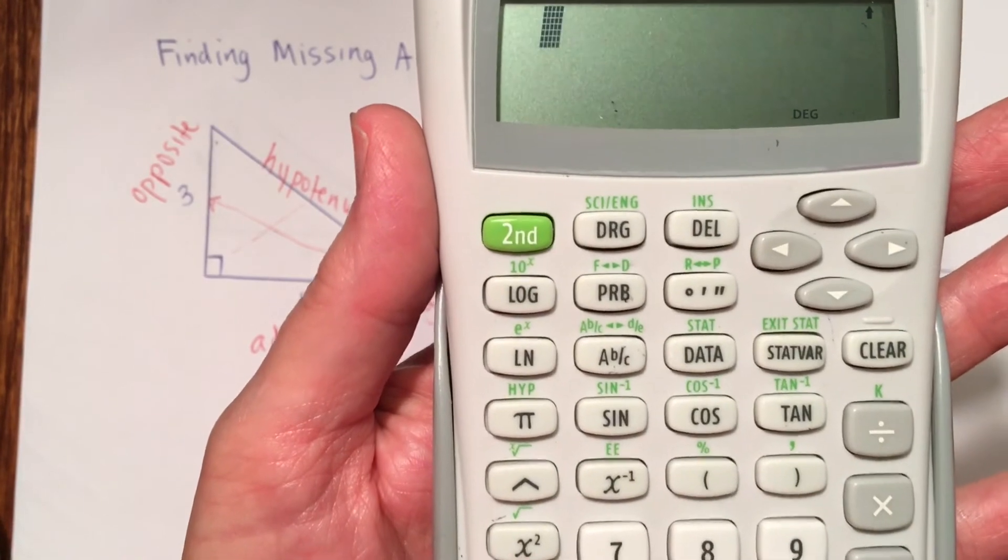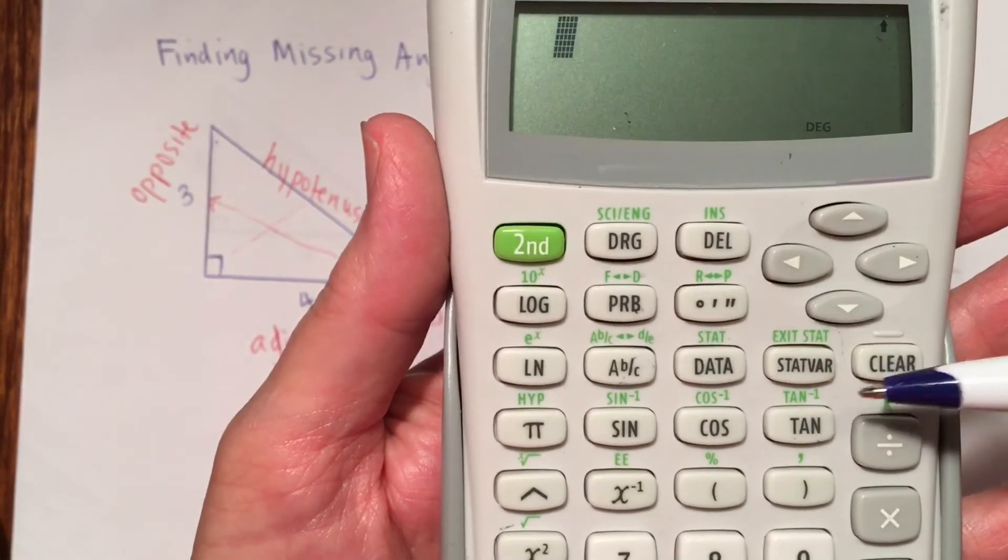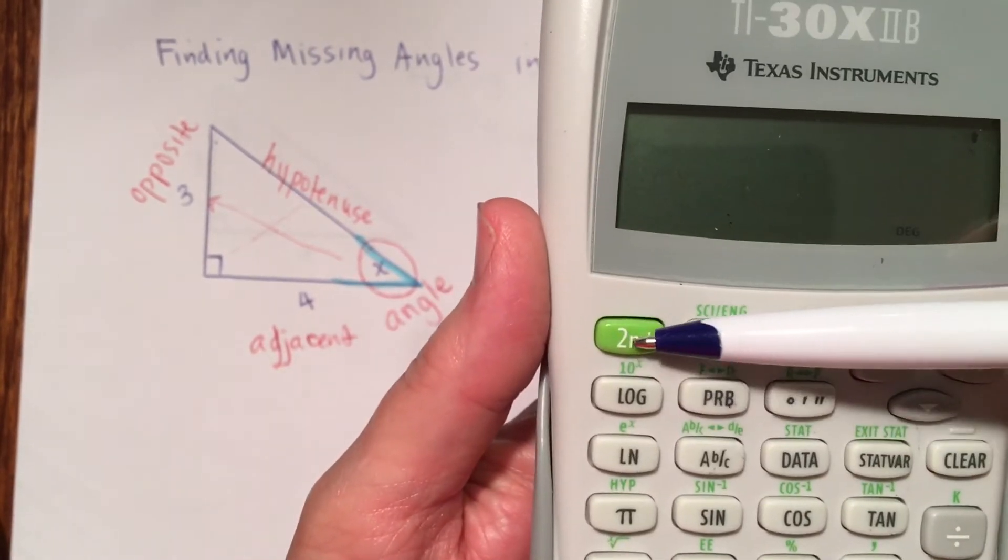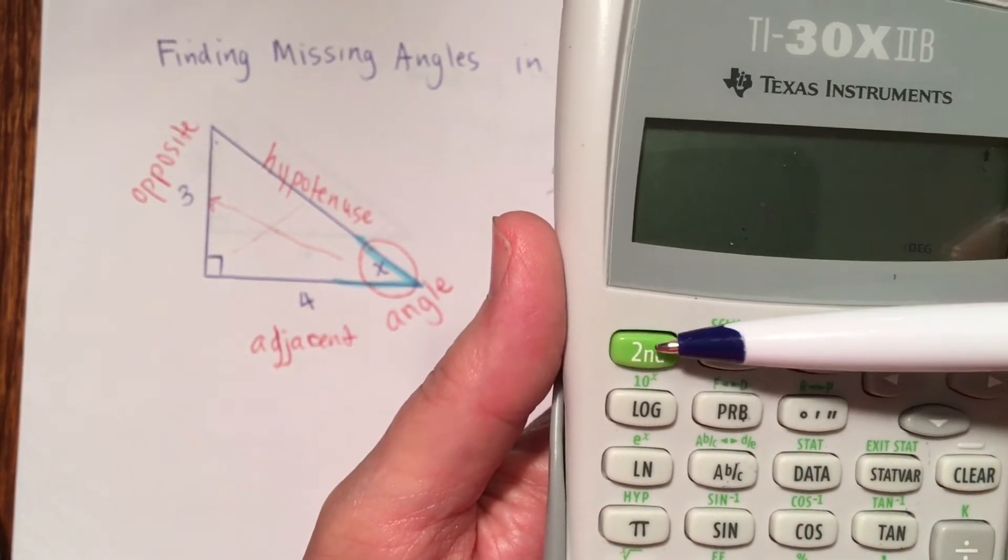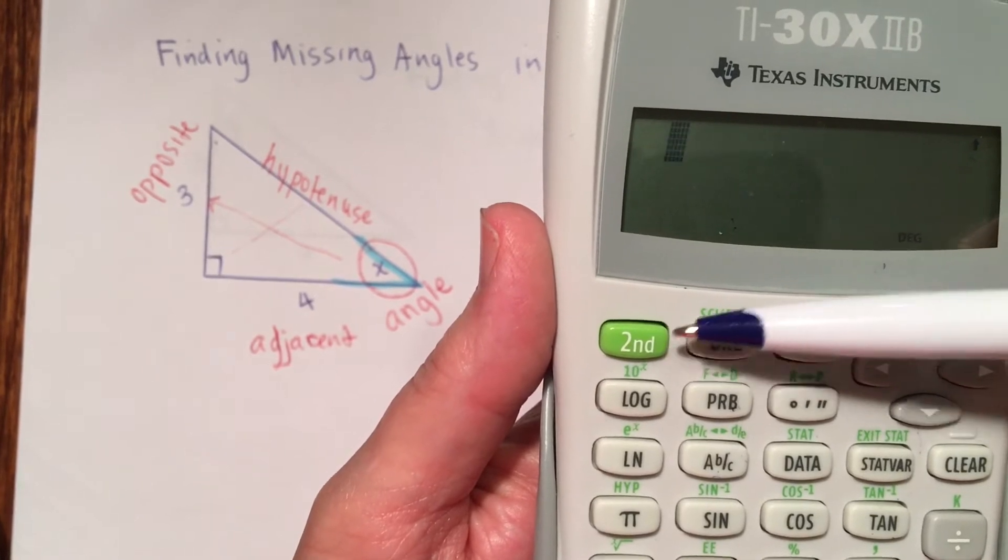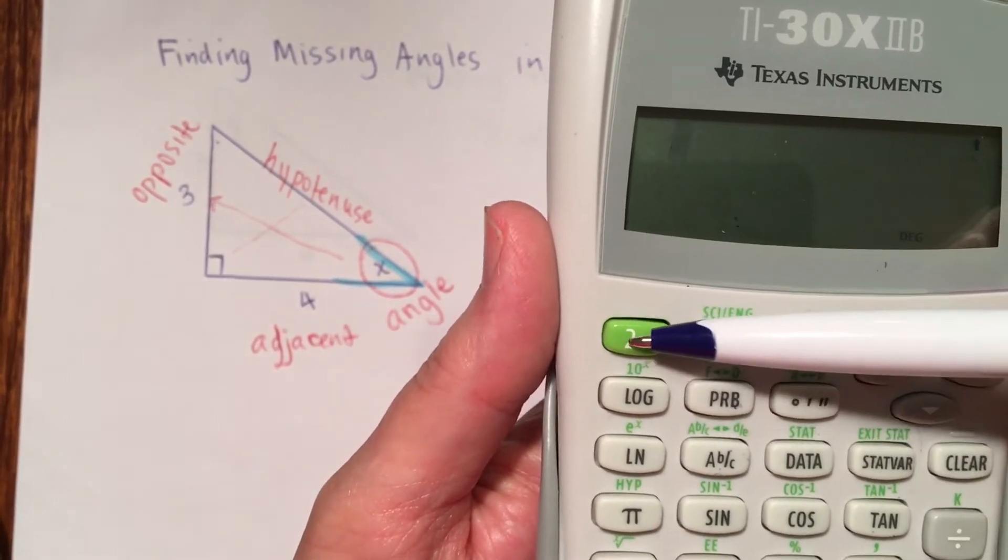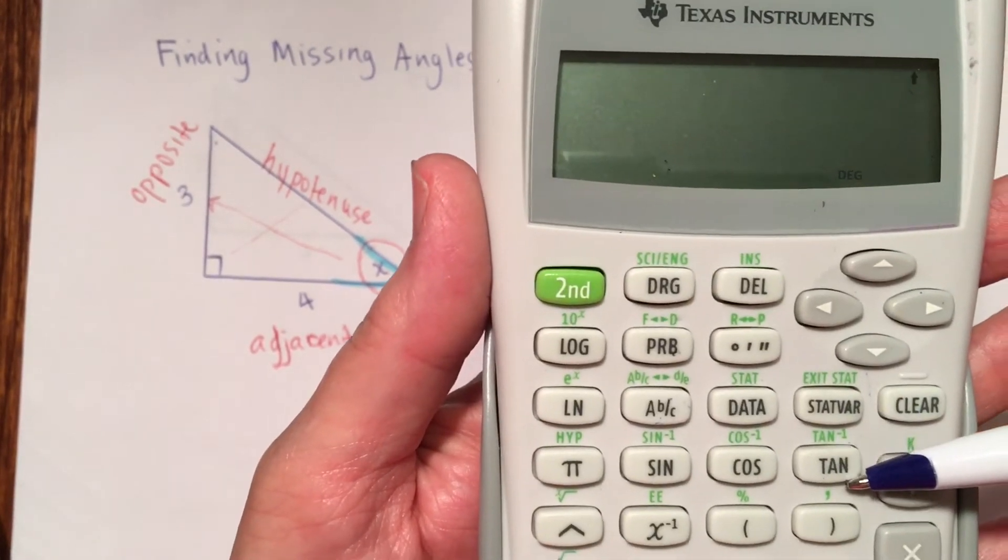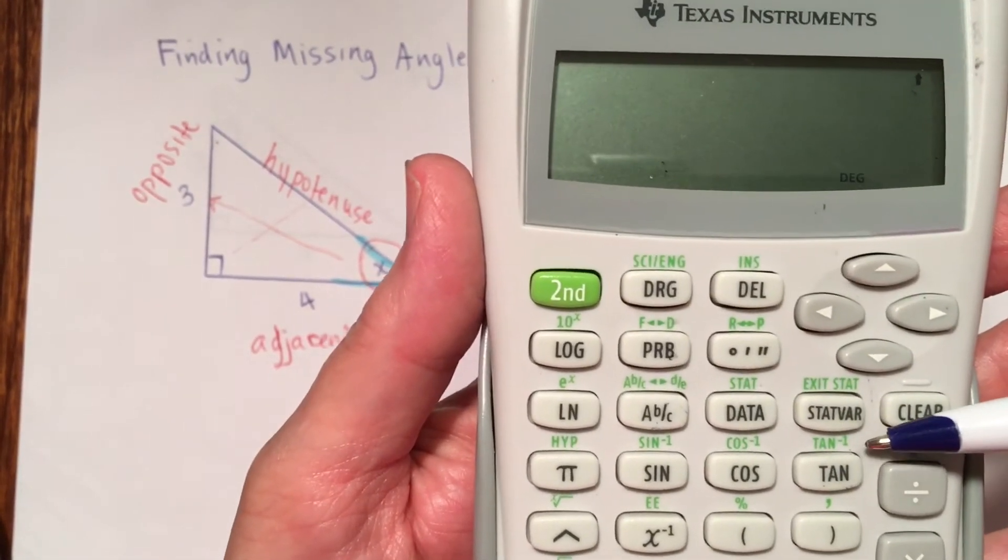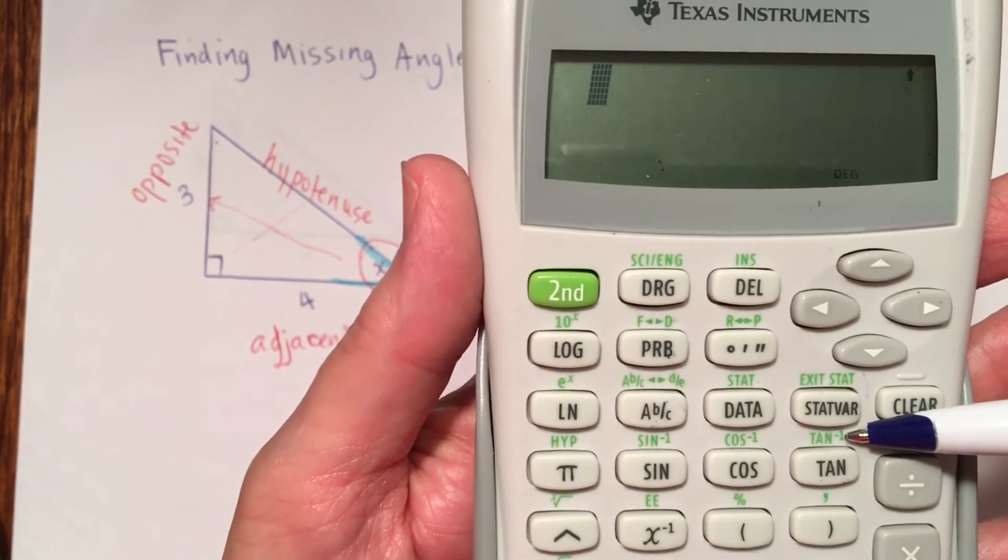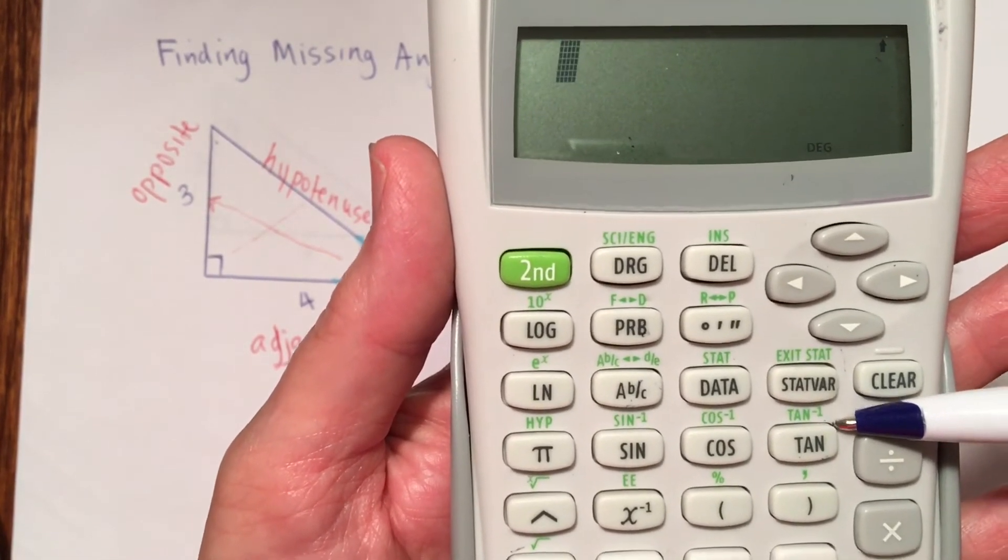If I want to get what's written on the calculator, I have to do the second key. On some calculators, it's a shift key. But this calculator, it says second. I have to do second tangent. And then I'm telling the calculator, don't do what's on the key, but do what's written on the calculator above the key.